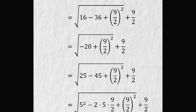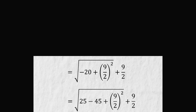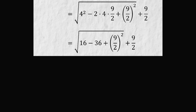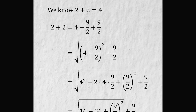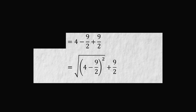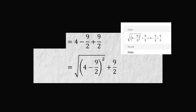Continuing the reverse check: minus 20 is rewritten as 25 minus 45 — no problem. 16 minus 36 equals minus 20 — no problem. Now we arrive at the critical step. Is it true that 4 minus 9 over 2 plus 9 over 2 equals the square root of the square of (4 minus 9 over 2), plus 9 over 2? No. This step is where the mistake is. This is the step that is false.